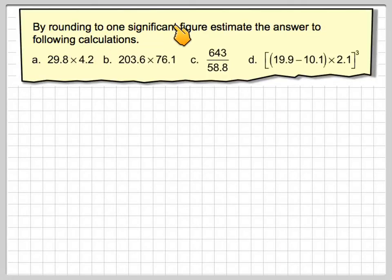By rounding to one significant figure, estimate the answer to the following calculations: 29.8 times 4.2, 203.6 times 76.1, 643 divided by 58.8, and 19.9 minus 10.1 times 2.1, all cubed.